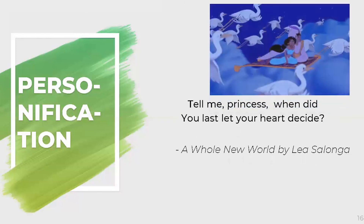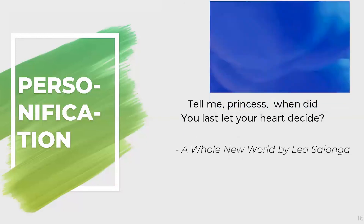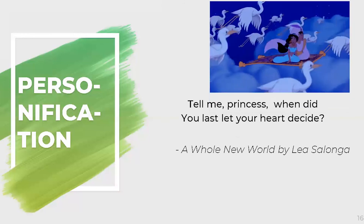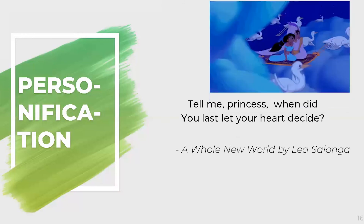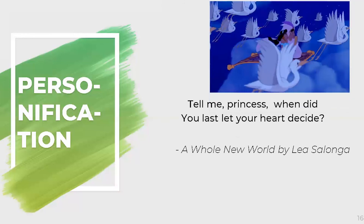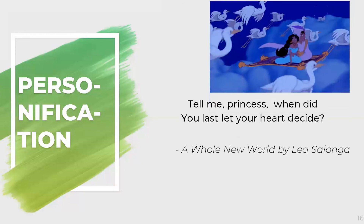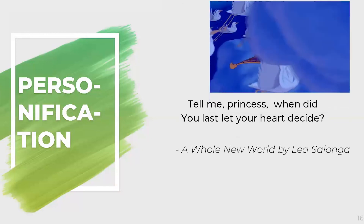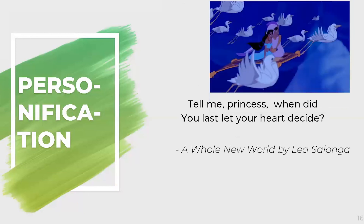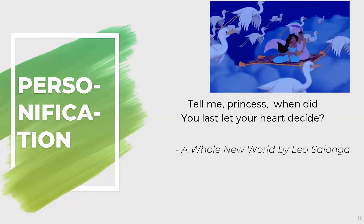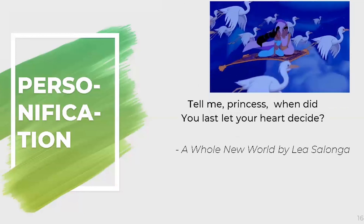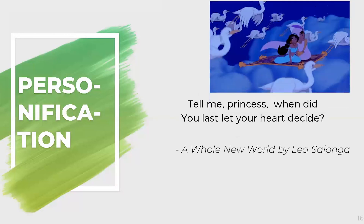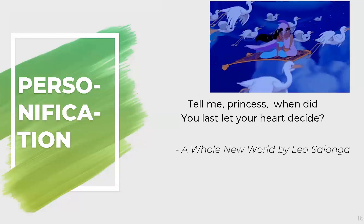A final example comes from 'A Whole New World' by Lea Salonga: 'Tell me, princess, when did you last let your heart decide?' It is not the heart that is going to decide — it is the person — but the word 'heart' is given a human ability. This makes it a perfect example of personification.